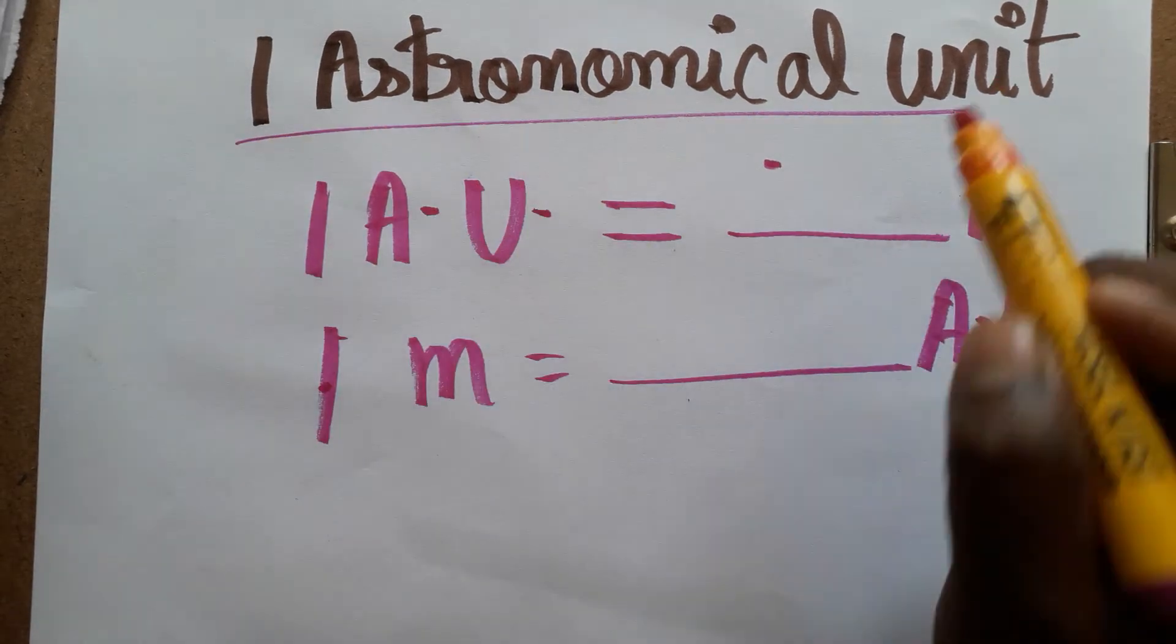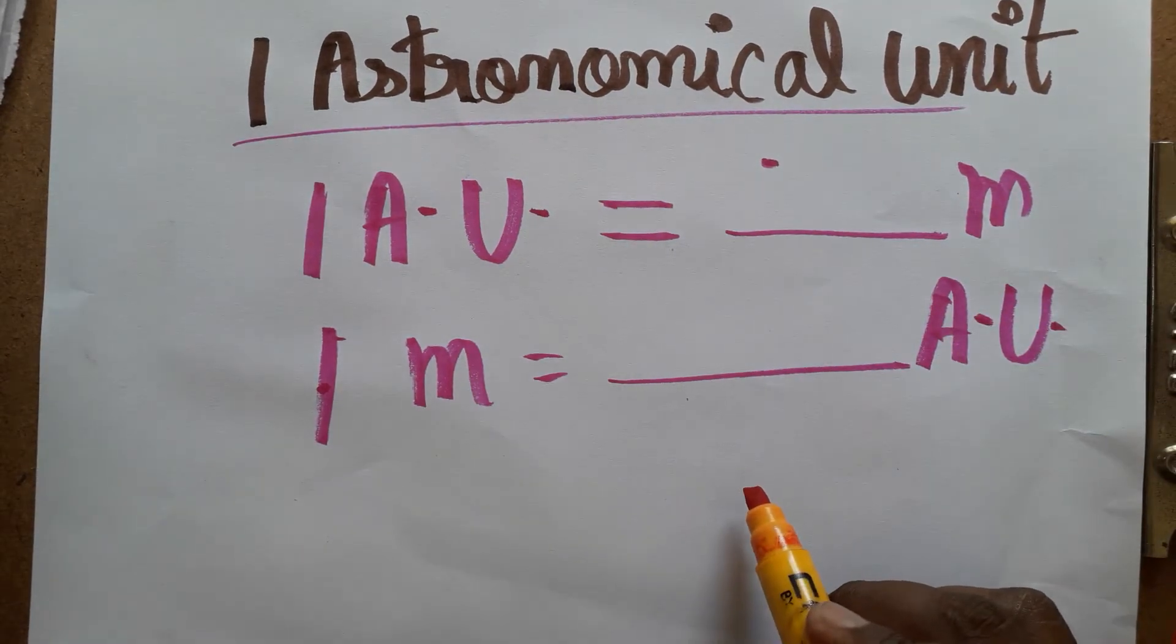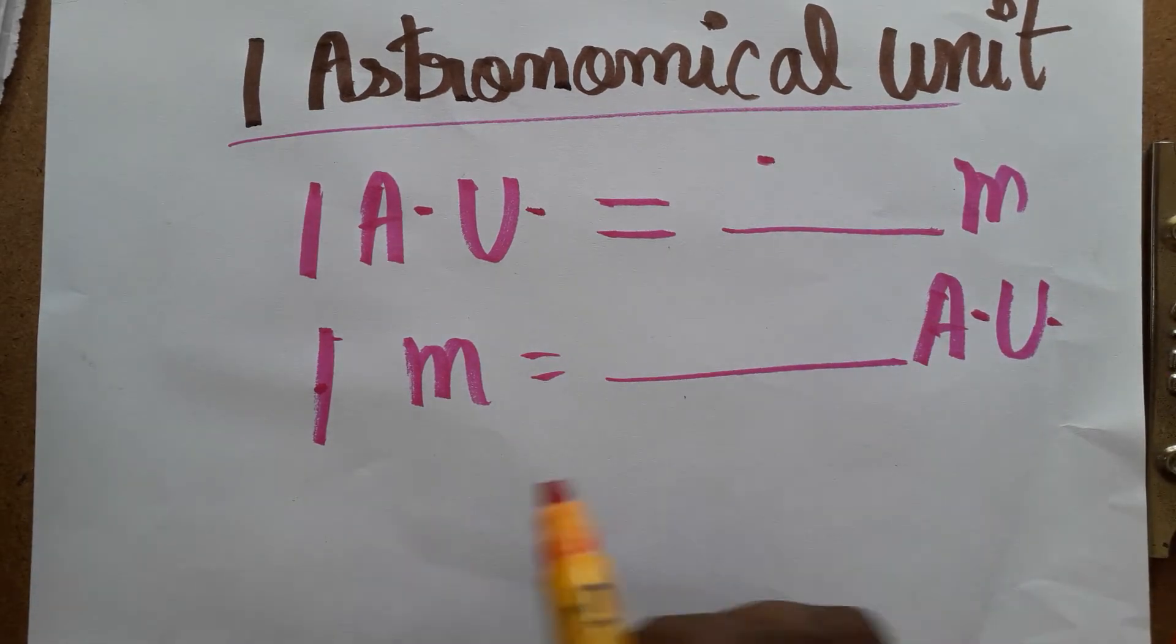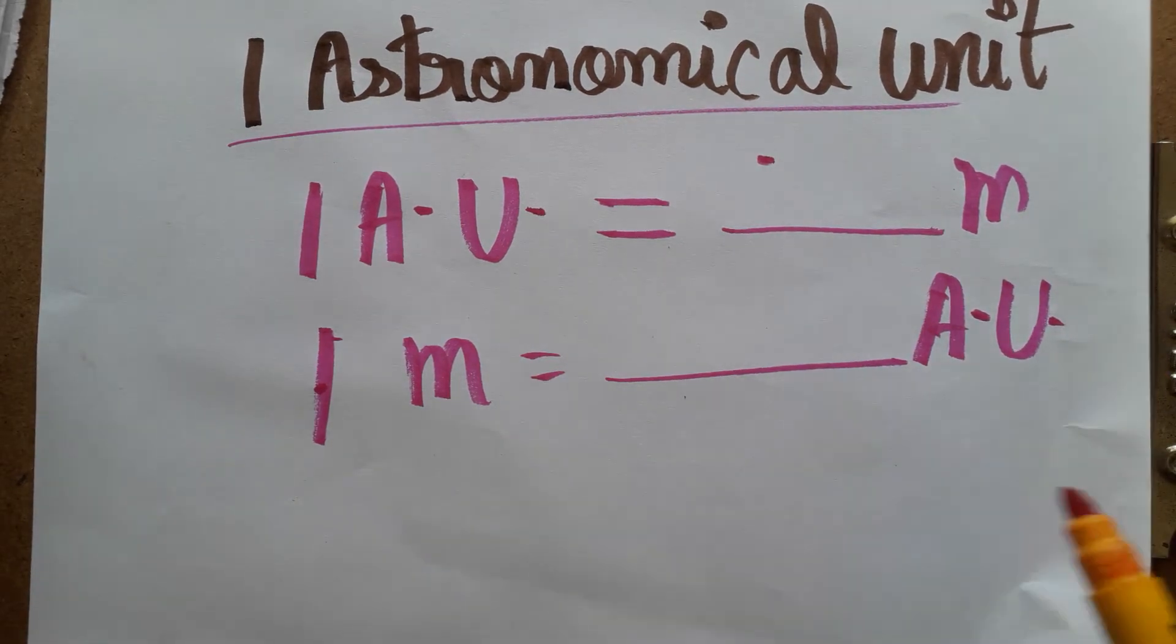Hello student, today we are going to learn what is one astronomical unit and also what is one astronomical unit in a meter, and also one meter is a dash astronomical unit. This is the thing we are going to discuss.